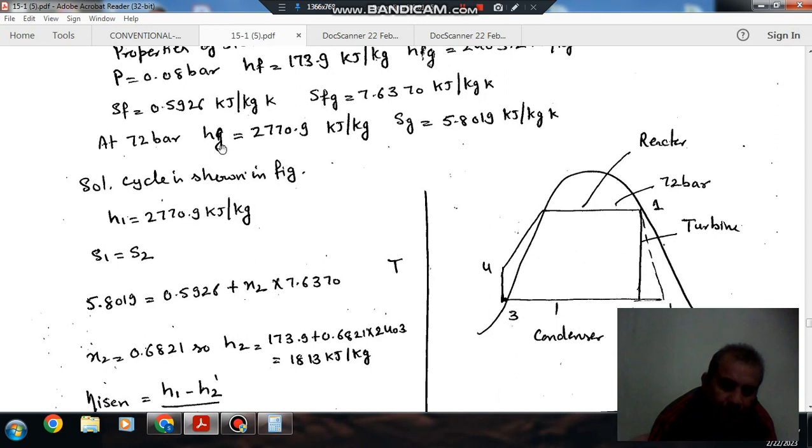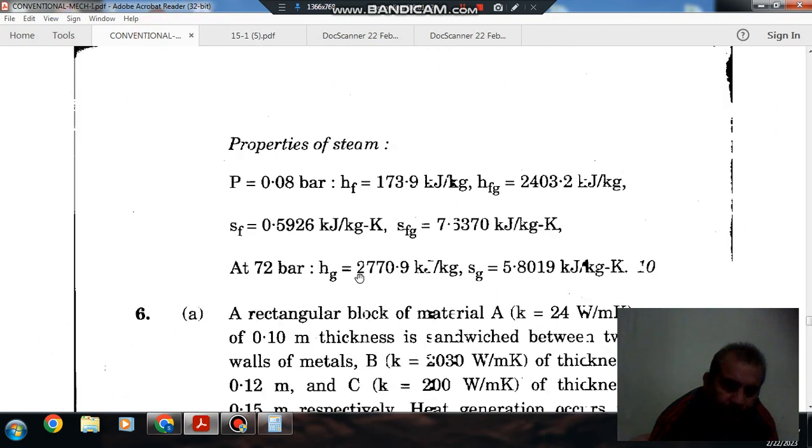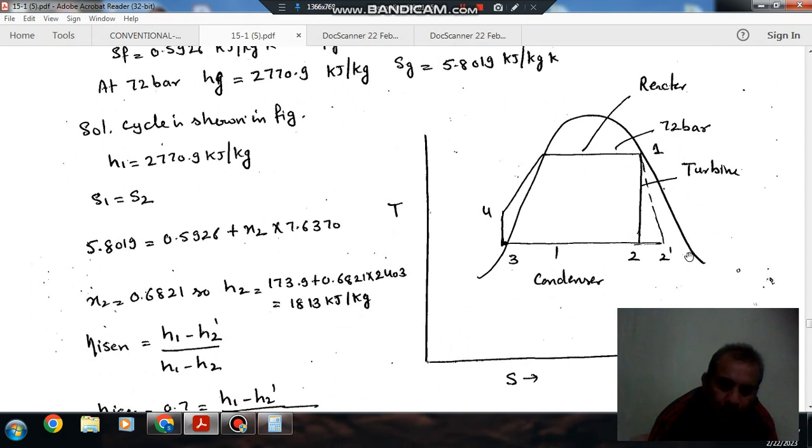At 72 bar, hg will be 2770.9 kilojoules per kilogram, and entropy is 5.8019 kilojoules per kilogram Kelvin from the given properties.